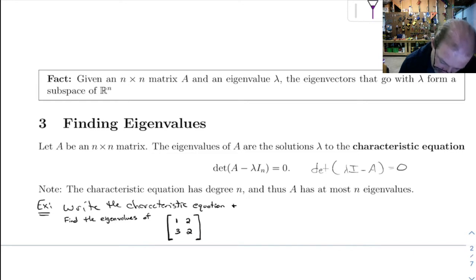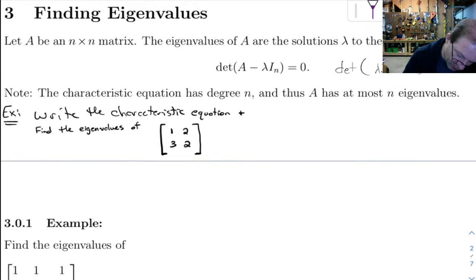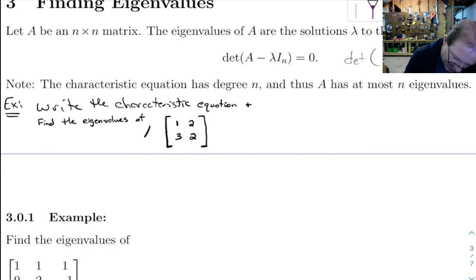Now, that's almost the same as what we have over here, except this is a determinant of A minus lambda I. So let's do an example. This one that I wrote in says write the characteristic equation and find the eigenvalues of this. All right, so the way we would do this is this is our A.